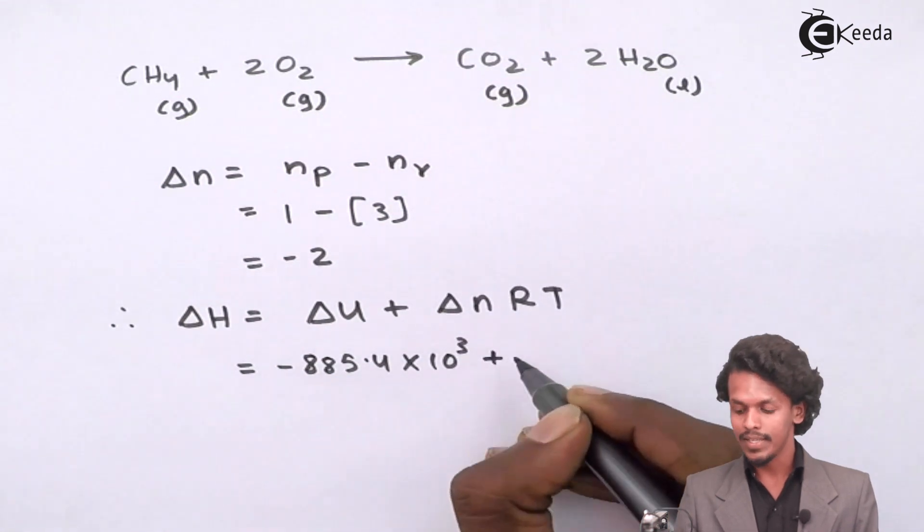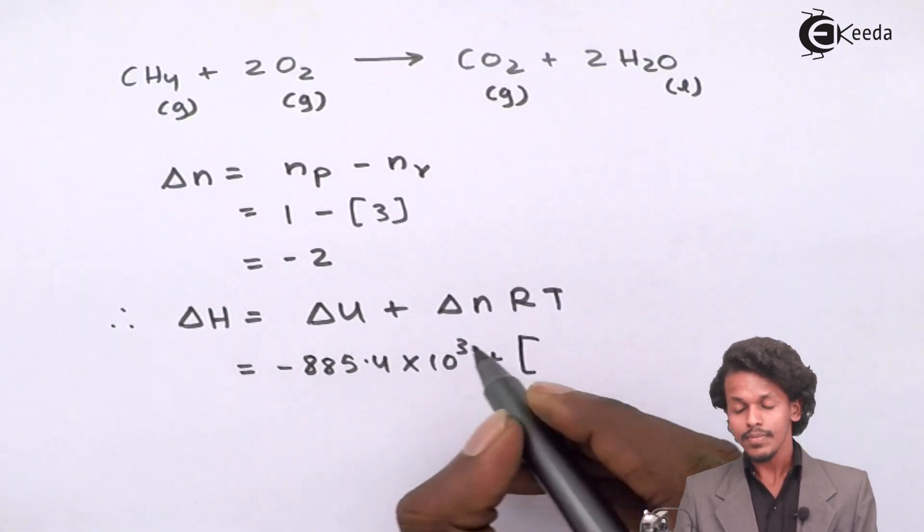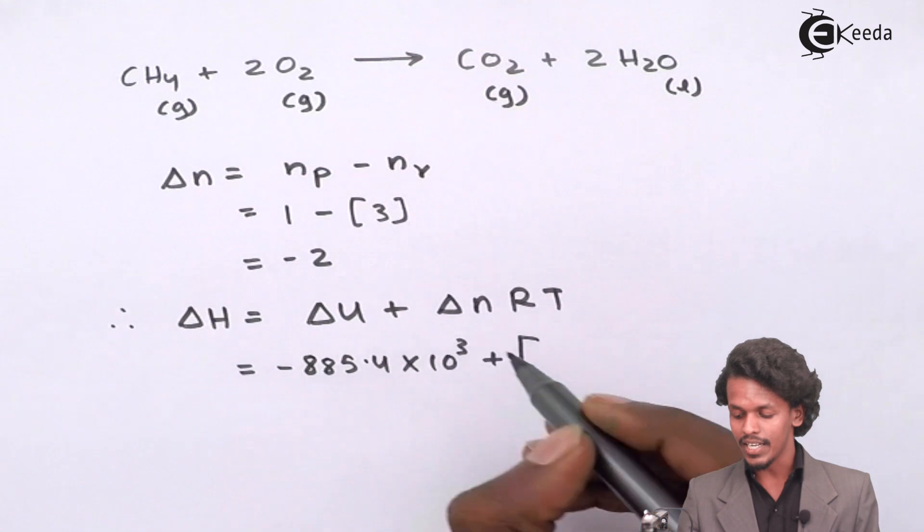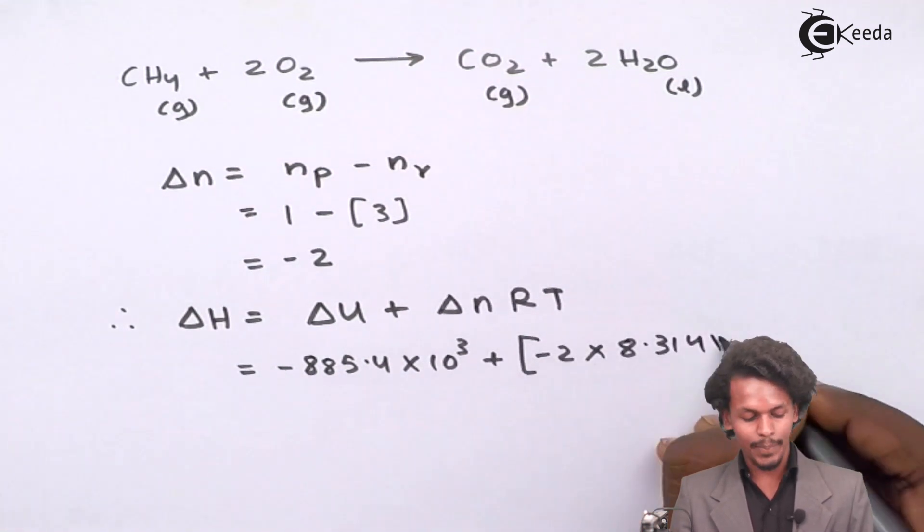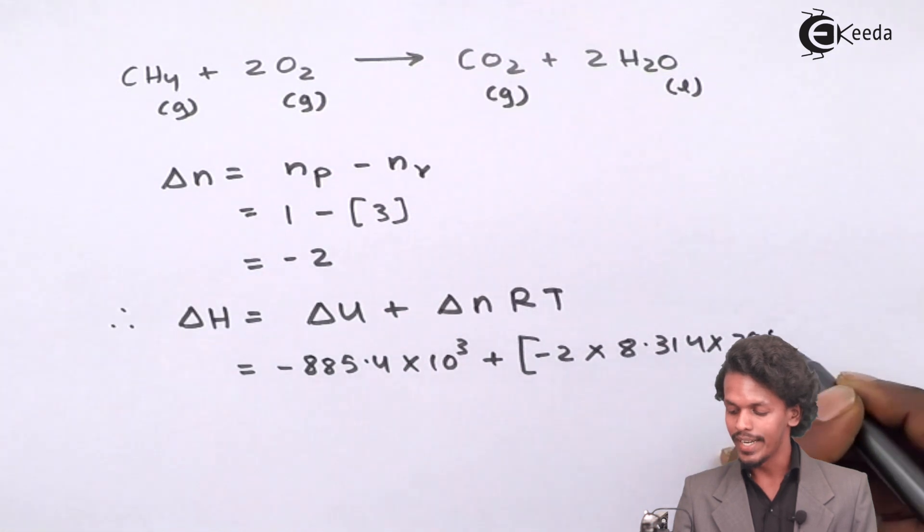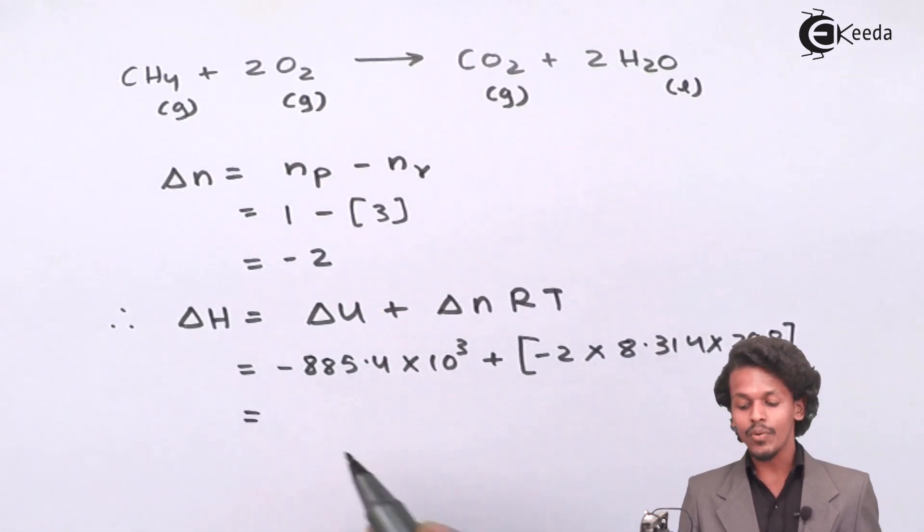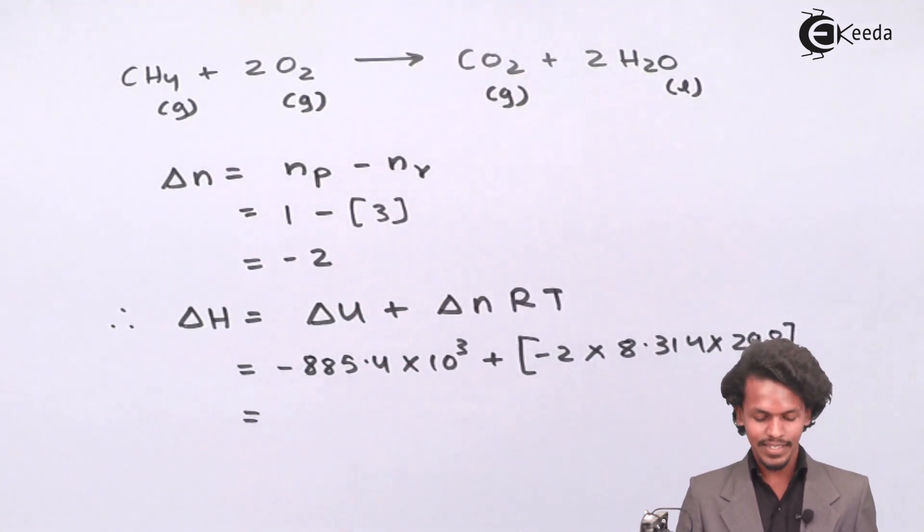Delta U is given as minus 885.4 times 10 to the power 3, plus since delta N is negative, minus 2 times 8.314 times the temperature 298. If I calculate this, I can easily get the answer as